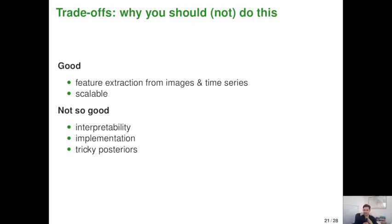Well, the good thing about these kinds of models is we know that neural networks are really good at extracting features from images and time series. They're super scalable if you can use stochastic gradient descent. But the not so good things are like they're not immediately as interpretable as a linear model. The implementation is kind of complex. Like you've got to write some bespoke machine learning code and posterior sampling is incredibly tricky. So point estimates are easy to get. Posterior samples, not so much.